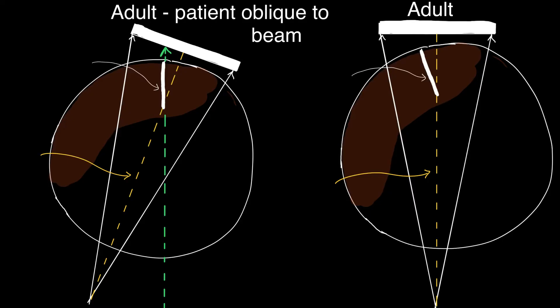If the patient is then oblique to the beam — so the patient is slightly rotated — that is the situation in which you'll see the falciform ligament in an adult.